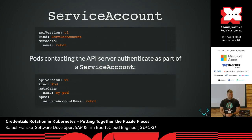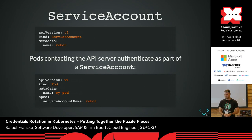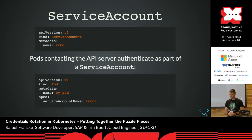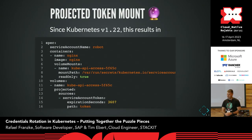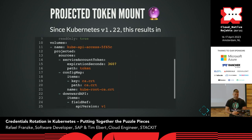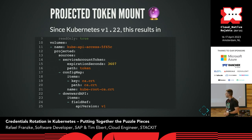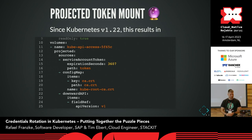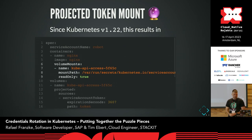Let's get started with service accounts. Pretty much everybody is aware of this: whenever a pod needs to communicate with the API server, it does so as part of a service account, which is the identity of that pod, and the service account is simply referenced in the spec. What happens when you apply this to a Kubernetes cluster is you get a projected volume with several sources — most prominently the service account token with some expiration seconds, the CA certificate of the cluster, and the namespace of the pod itself.